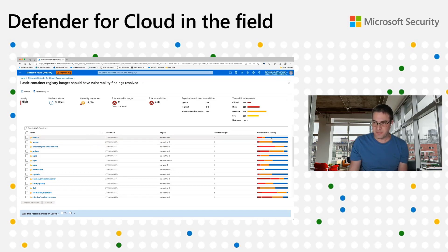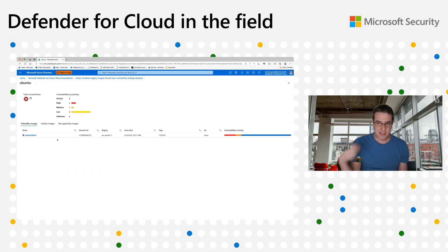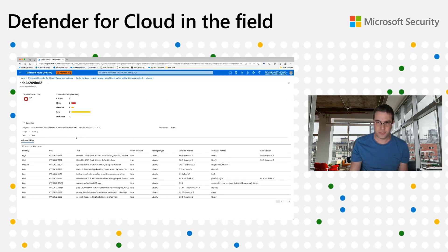For each repository that has been scanned, you can see directly from this view how many vulnerabilities of each type were detected — going from unknown to critical based on CVSS severity. You can also see the repository with the most vulnerabilities, the total vulnerabilities, and how many repositories are healthy versus unhealthy. If I dive down to the next level, I'll be able to see each image that has been scanned. I can click on that image and get the full vulnerability report, which includes a summary of severities per vulnerability detected, as well as detailed information of each vulnerability found.